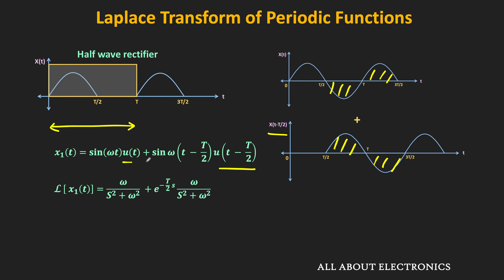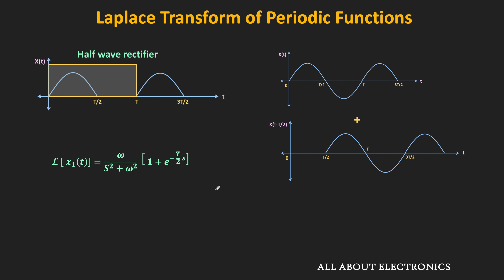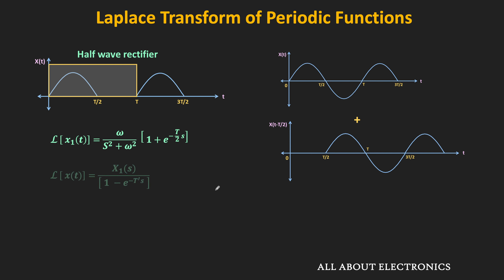The Laplace transform of sin(ωt) is ω/(s² + ω²). For the second term, using the time-shifting property, the Laplace transform is e^(-T/2 · s) times ω/(s² + ω²). Simplifying, X1(s) equals ω/(s² + ω²) times (1 plus e^(-Ts/2)). That is the Laplace transform of x1(t). Now here, since we use capital T as the time period of the sinusoidal signal, we use T' to represent the time period of the periodic function whose Laplace transform we are finding.